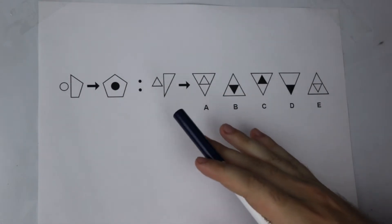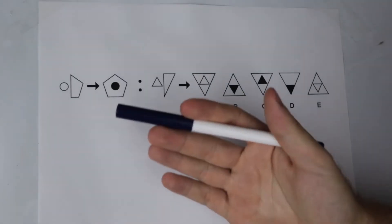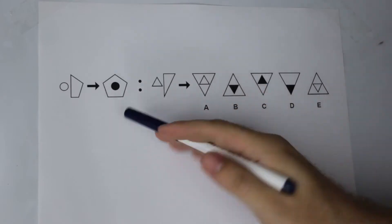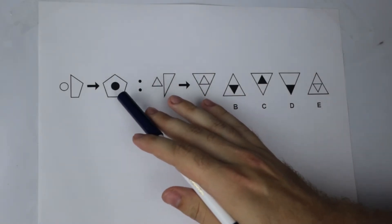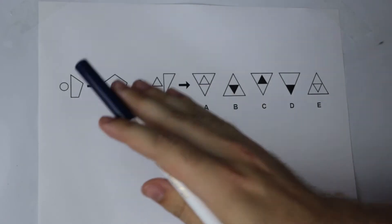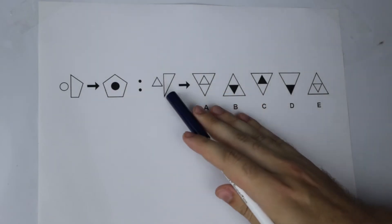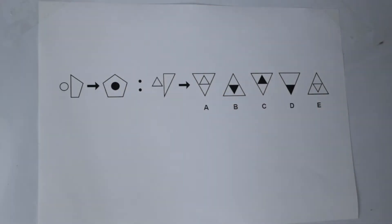The reason we call these transformation questions is because you're given a figure on the left and then an arrow which indicates a change in the shape or a transformation, and it becomes the shape or the figure on the right. Now our job is to build up a list of rules - how is this shape being changed into this shape here - and once we've built up those rules we can apply it to our given shape to find our answer.